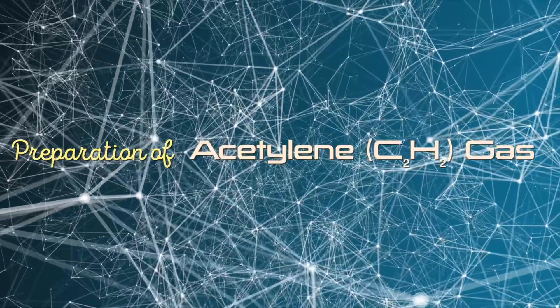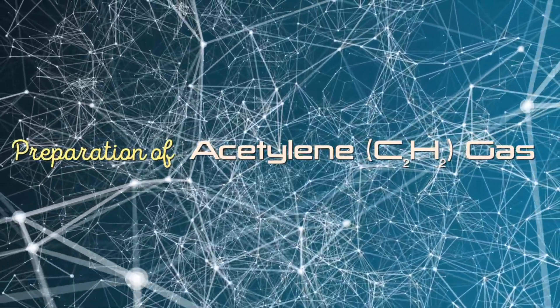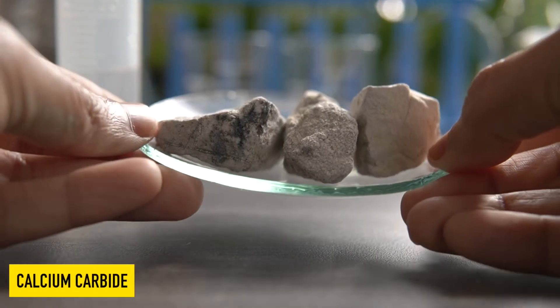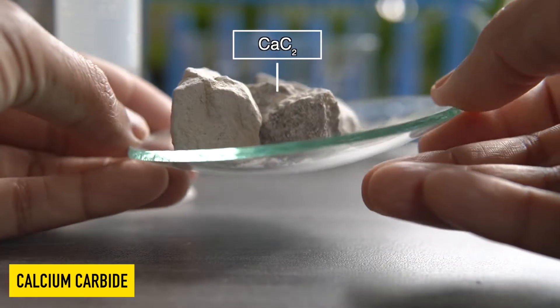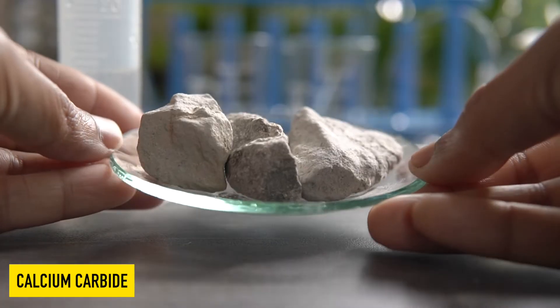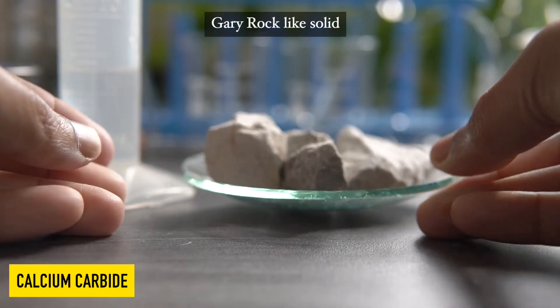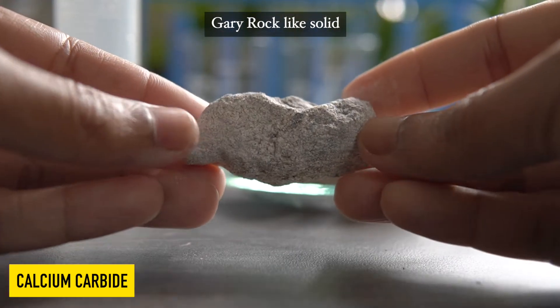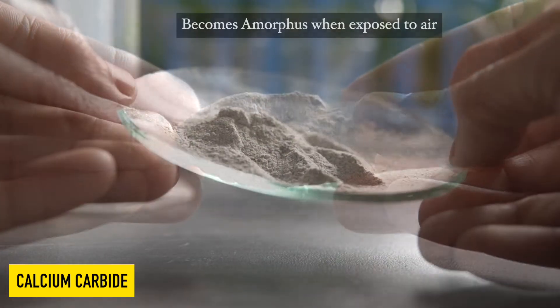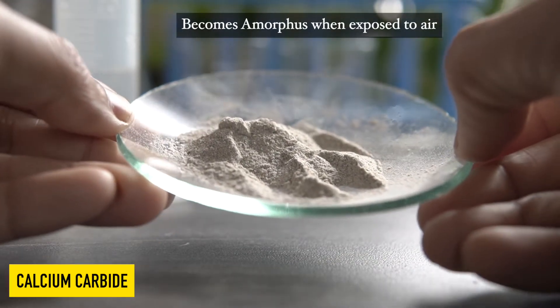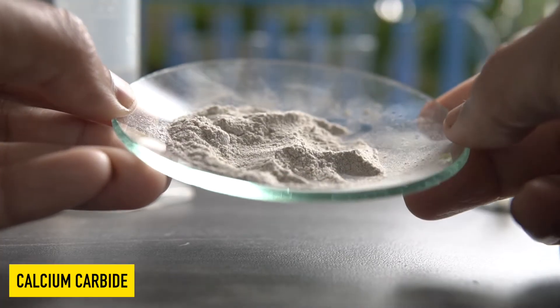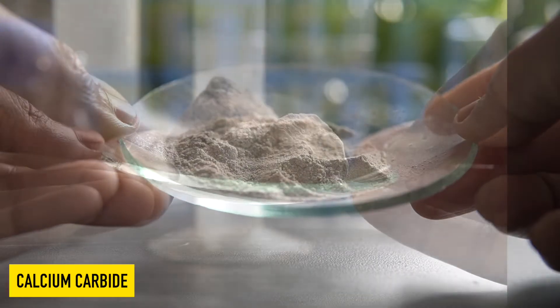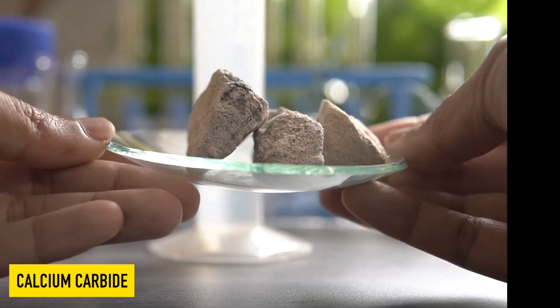Today we will see how to prepare acetylene gas in laboratory. To prepare acetylene gas in laboratory we need calcium carbide. Calcium carbide is a gray color solid. It can easily be available in your hardware shop. It is a hygroscopic substance and can easily become amorphous if exposed to air. That is the reason why we should always keep calcium carbide in an airtight container.